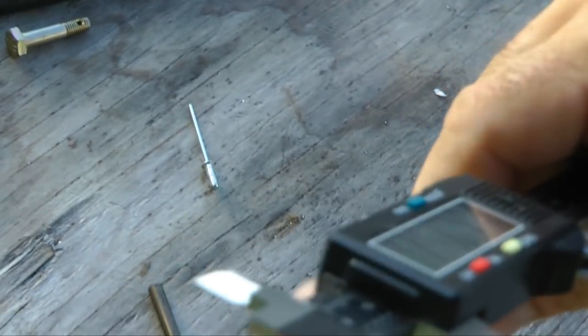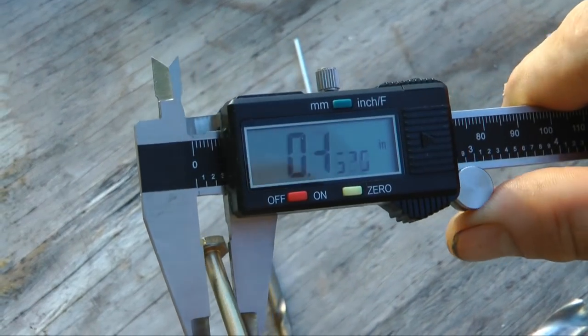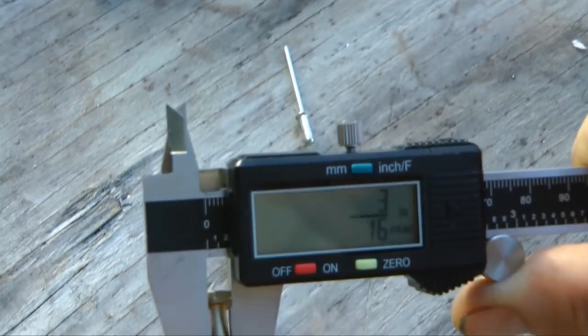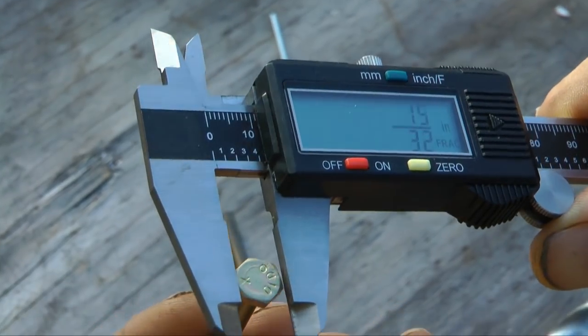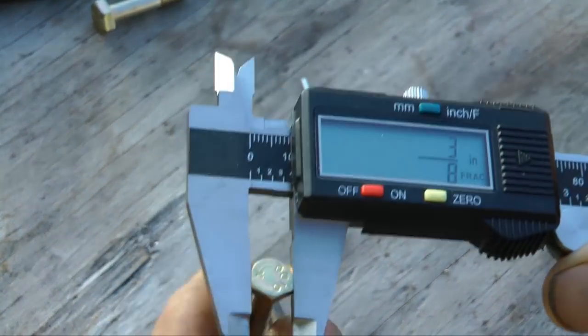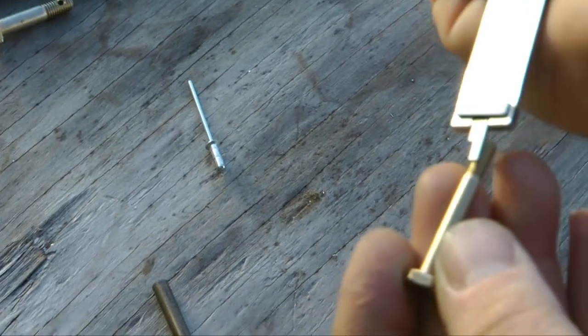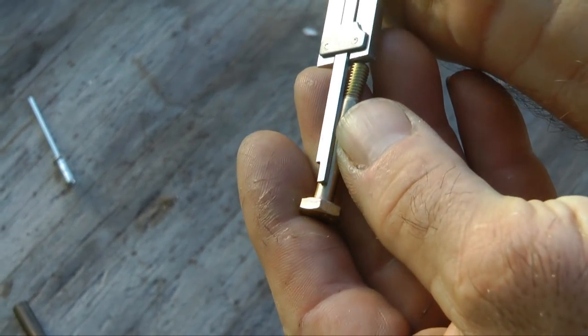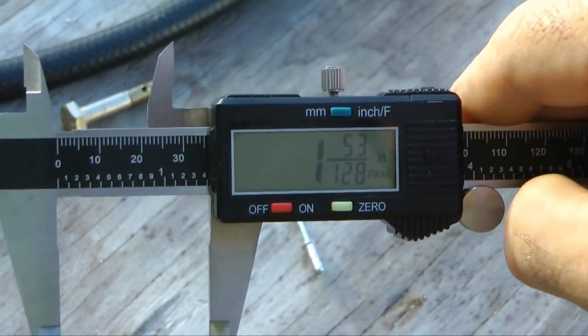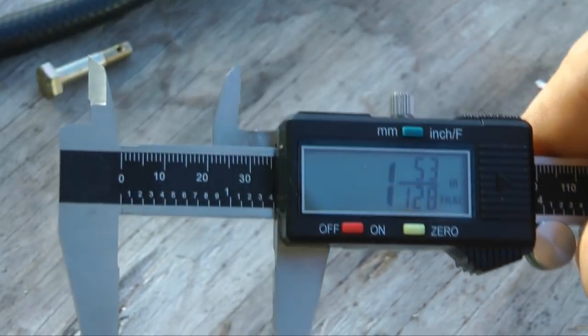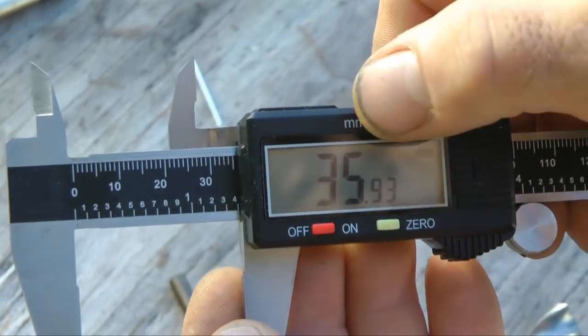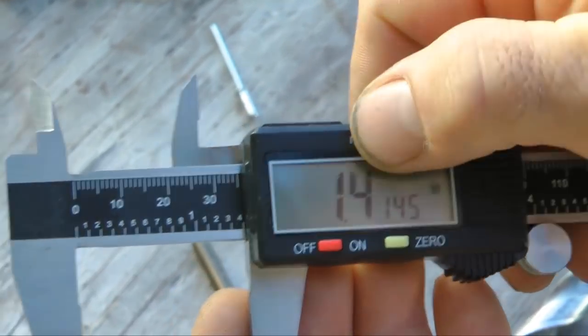So we got some 3 16ths hardware. Back to fractions. 3 16ths. Happens to have a 3 8ths head. Length is 1 and 53 128ths. Or 35, almost 36 millimeters. 1.4 and something inches.